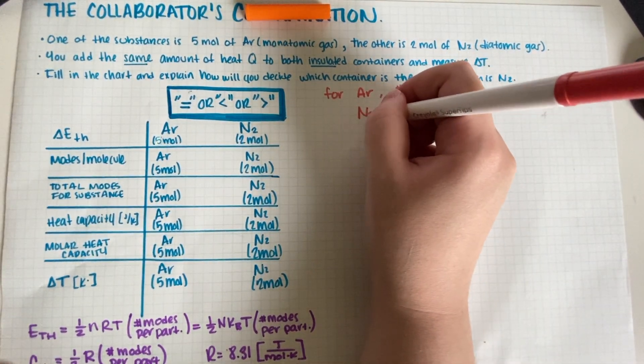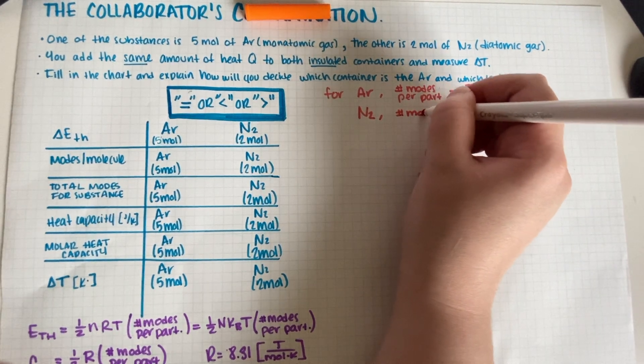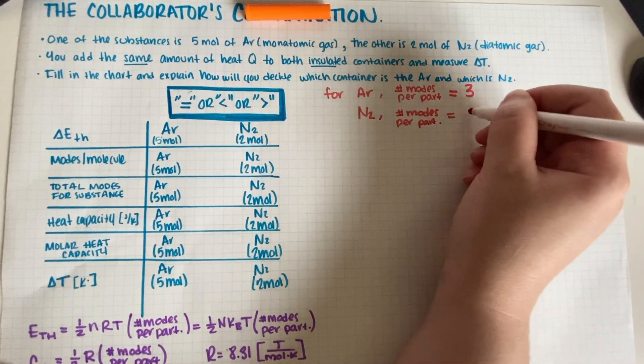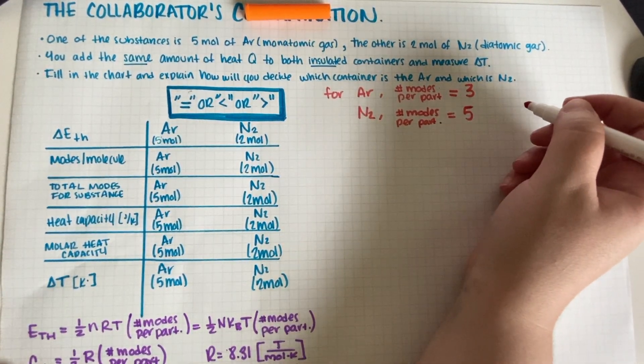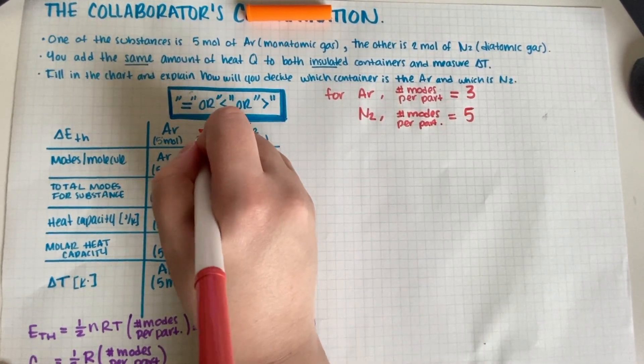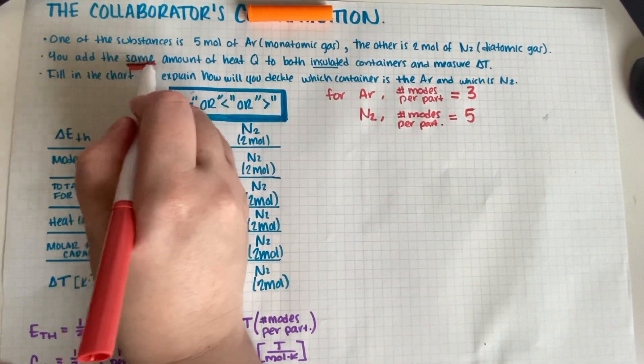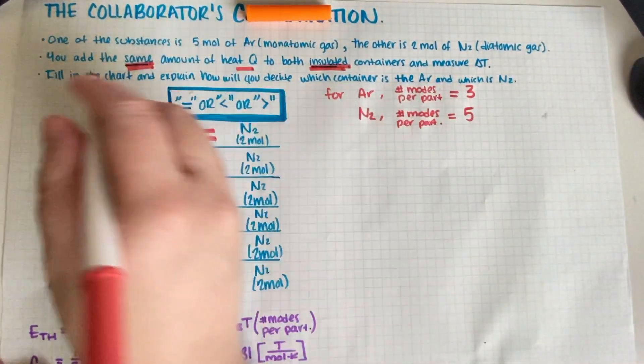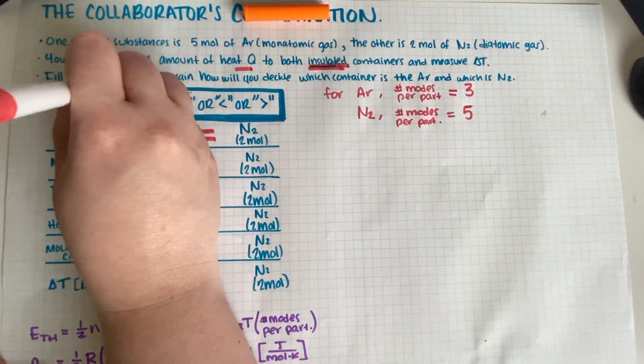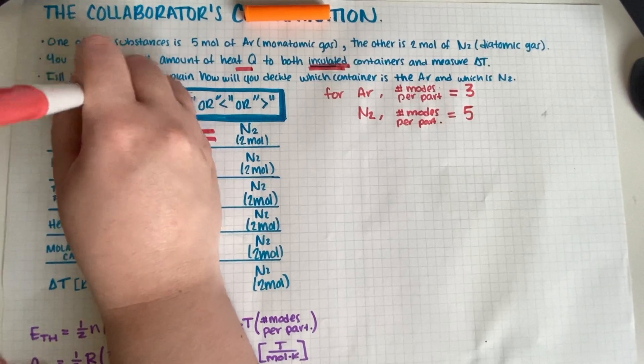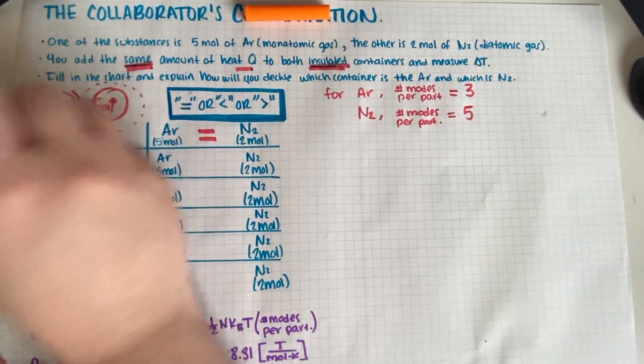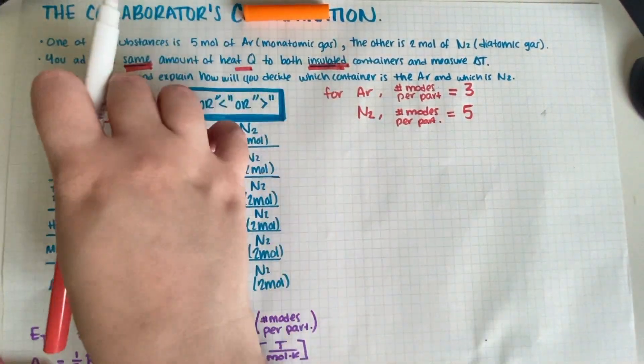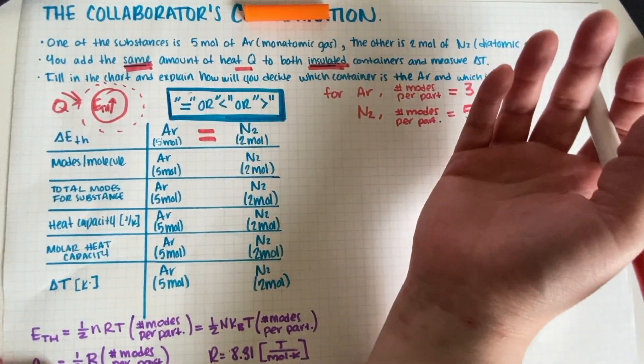For your diatomic gas, your number of modes per particle is equal to five. Now in terms of E-thermal, both of them are gonna be exactly the same. Why? Because it's the same amount of heat to both insulated containers. So basically if you draw an energy diagram, you are adding some heat and that results in E-thermal going up.